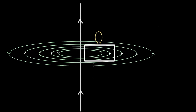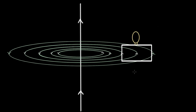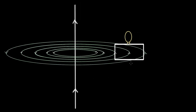If we move the square loop to the right, the magnetic flux through it changes because the magnetic field strength varies with distance from the wire. This changing flux induces an EMF, lighting up the lamp. Notice how the bulb stops glowing when we stop moving the loop — because then there is no change in magnetic flux, and therefore no induced EMF.